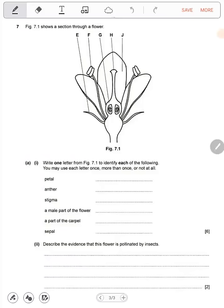What's an anther and how does an anther look? An anther is where pollen comes from. That is F, you can see by the structure. Then the stigma is H, you can see by its shape. A male part of the flower, that is F, the anther.